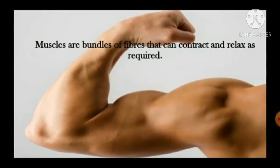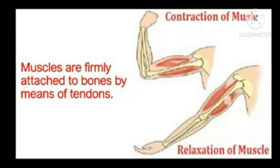Muscles contract and relax as different parts of our body move. Muscles give our body a specific shape and posture. What is a muscle? Muscles are bundles of fibers that can contract and relax as required. Muscles are firmly attached to bones by means of tendons. When muscles contract, there is movement at the joint and the bones move either nearer to or away from each other.